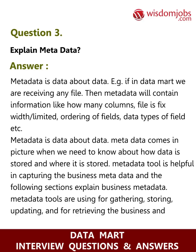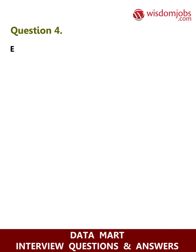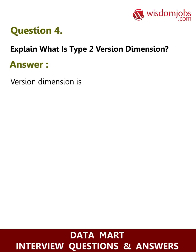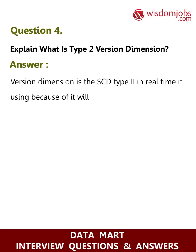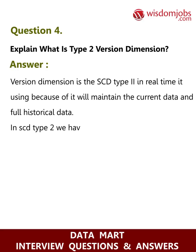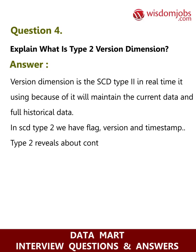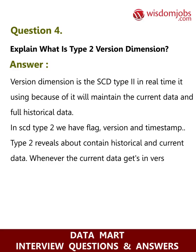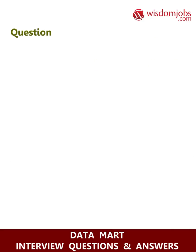Metadata tools are used for gathering, storing, updating, and retrieving the business and technical metadata of an organization. Question 4: Explain what is Type 2 version dimension. Answer: Version dimension, known as SCD Type 2, is used in real time because it maintains current data and full historical data. In SCD Type 2 we have flag, version, and timestamp. Type 2 reveals historical and current data whenever the current data gets a version change.